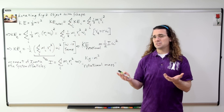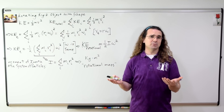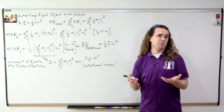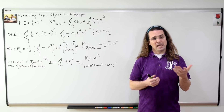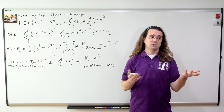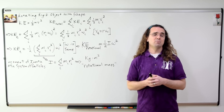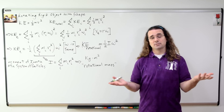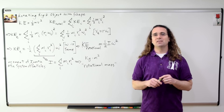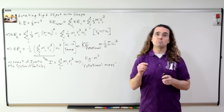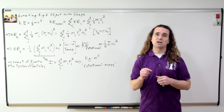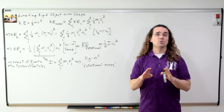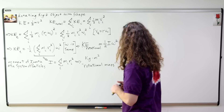For some reason, kilograms times meters squared seem strange to people for the units of moment of inertia. And yes, sometimes people call moment of inertia rotational mass. Now let's take a look at the equation for the moment of inertia of a rigid object with shape rather than a system of particles.